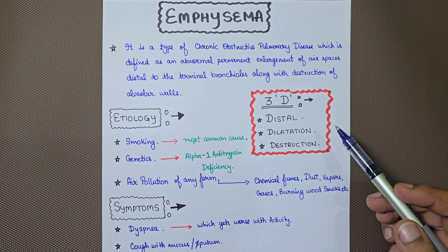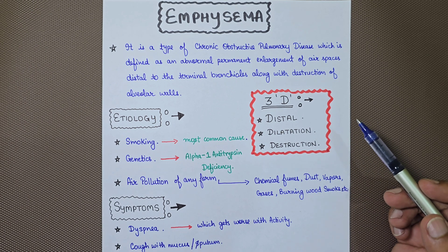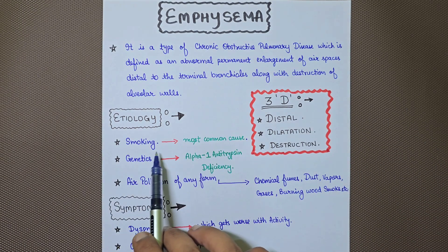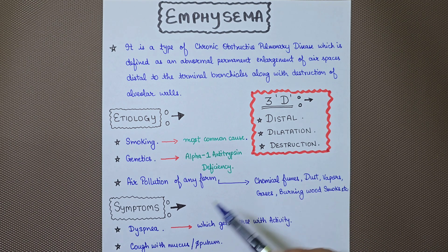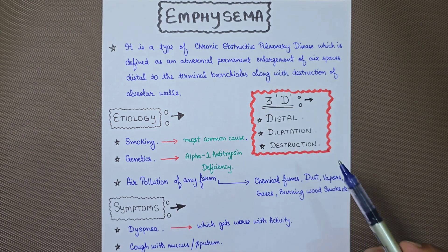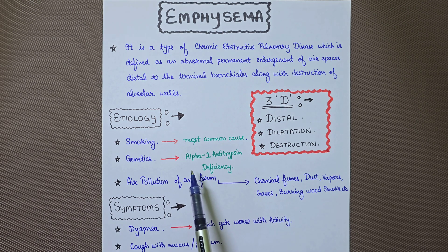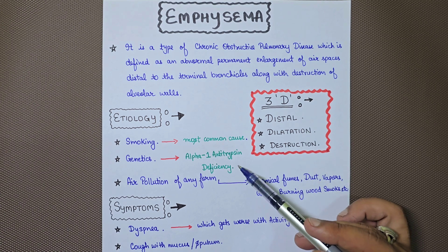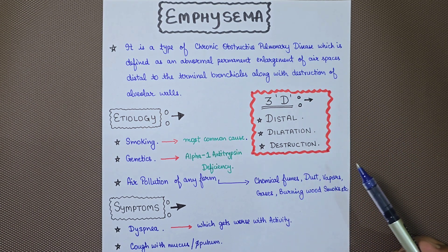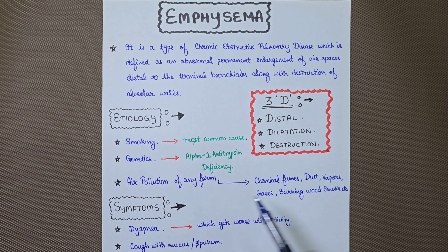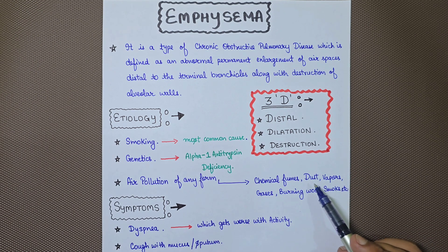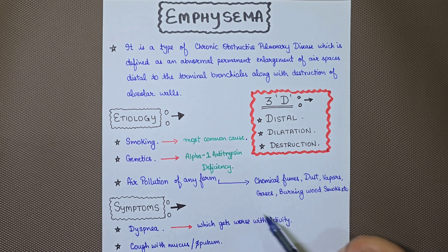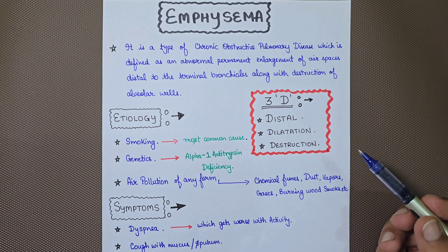The most common etiological factor for emphysema is smoking — cigarette or any kind of tobacco smoking. Genetics also plays an important role; for example, alpha-1-antitrypsin deficiency can lead to emphysema. There can also be air pollution of any form, such as long exposure to chemical fumes, dust, vapors, gases, or burning wood smoke. Long exposure to these irritants can lead to emphysema.